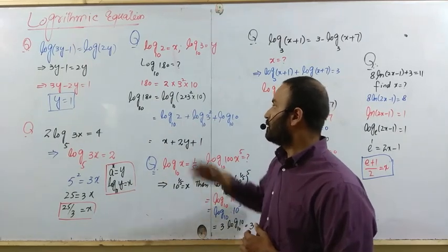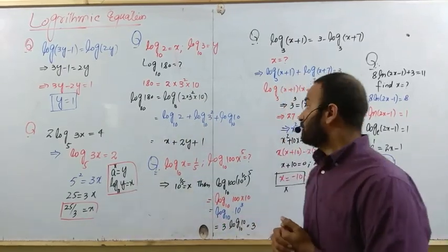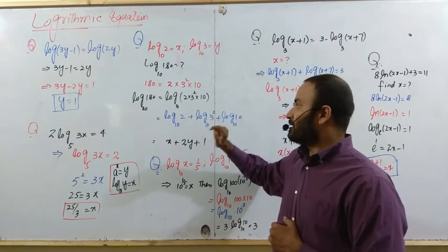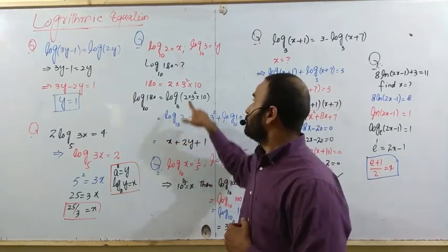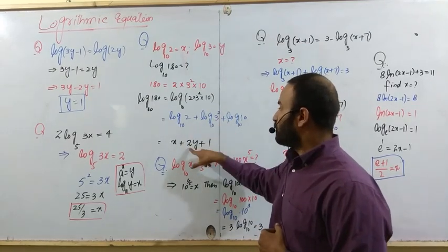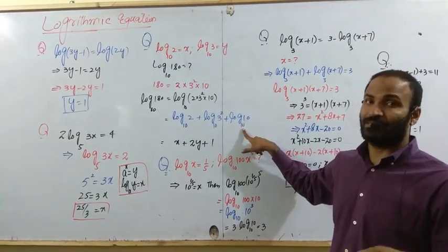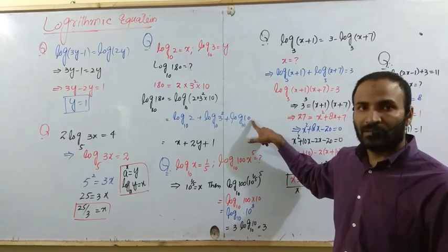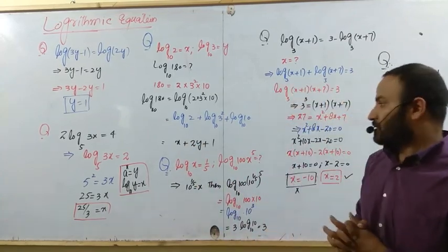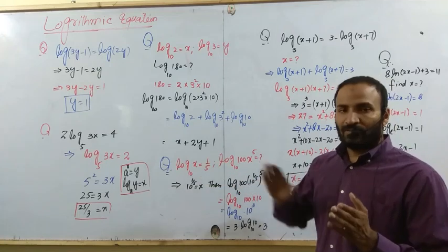Another question uses the property that log of products can be separated. Log base 10 of 2 equals x, and log base 10 equals y. Now finding the value in terms of these, you can answer that the value is x plus 2y plus 1.